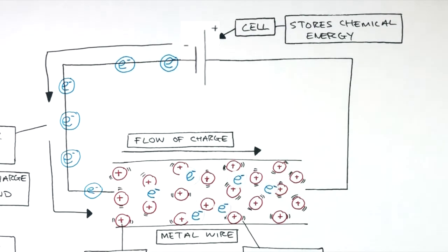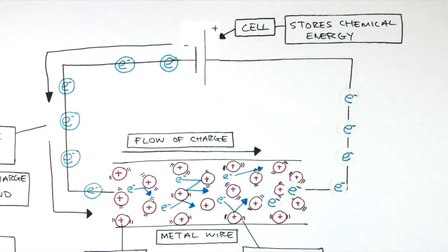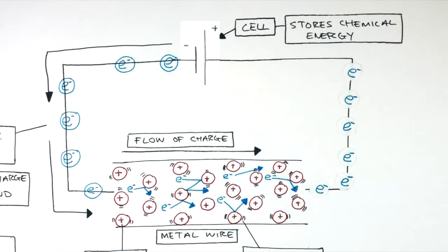As this flow of charge moves through the metal wire, the electrons collide with the positive metal ions. This slows down the electrons. And this is what resistance is: the slowing down of an electric current as the electrons move through the wires and components.